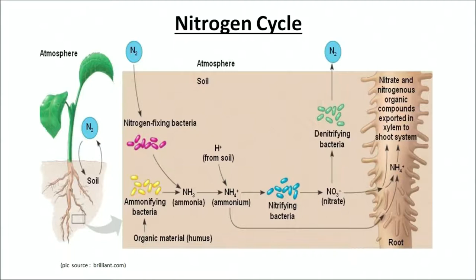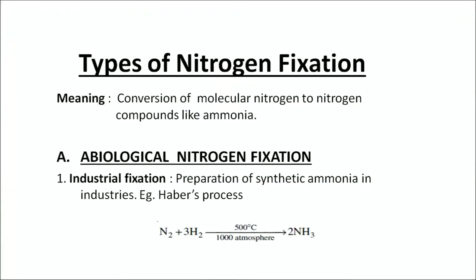The same nitrogen cycle is given in the form of different steps. As a recap: nitrifying bacteria convert nitrogen into ammonium and then into nitrate, and then the plant absorbs these nitrates. The remaining nitrates are acted upon by denitrifying bacteria and converted back to nitrogen. Next, we will talk about types of nitrogen fixation. The meaning of nitrogen fixation is the process of conversion of molecular nitrogen to nitrogen compounds such as ammonia.